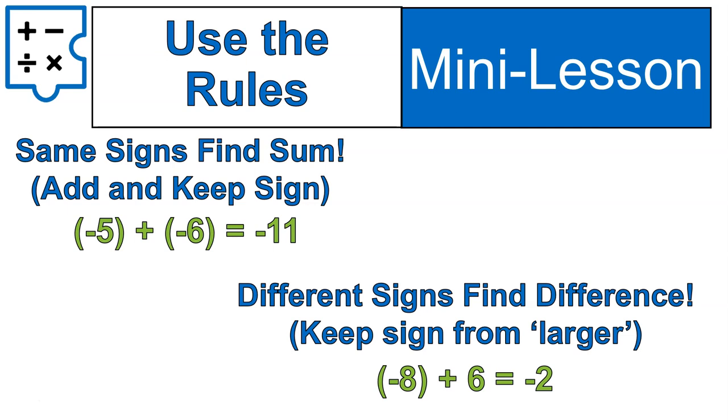So in this case, negative 8 plus 6, I would subtract 8 minus 6. Then I would keep the sign from the larger. And I put larger in quotation marks. It's the larger absolute value. Or in other words, ask yourself, which is there more of? There are 8 negatives and 6 positives. There are more negatives than positives. So your final answer will be negative. And I don't mean to be so negative. Both answers on this slide. But you will see a lot of questions with negatives. So I want to prepare you for that.